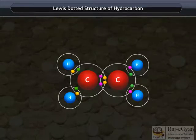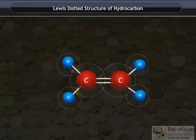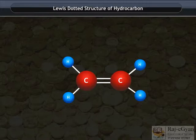As a result, each hydrogen atom acquires 2 electrons in the outermost shell and achieves a noble gas configuration. Each carbon atom acquires 8 electrons and a noble gas configuration. Thus, carbon-carbon forms a double bond while carbon-hydrogen forms a single bond.